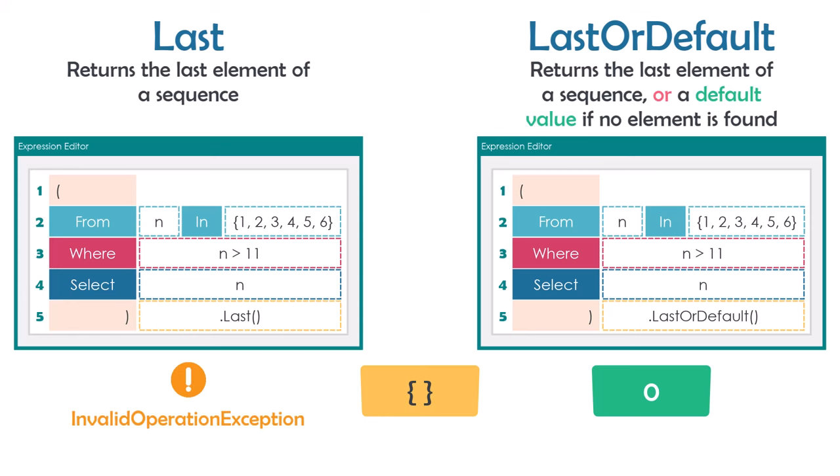In summary, both operators get the last element from a sequence. But if the sequence is empty, Last throws an InvalidOperationException, while LastOrDefault returns the default value for the type.